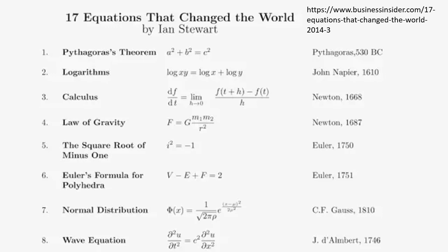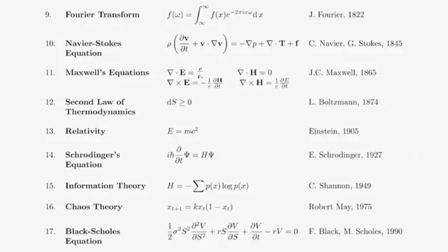Continuing the list: Euler's formula for polyhedra, normal distribution by C.F. Gauss, wave equation by J.D. Albert, the Fourier transform by Fourier, the Navier-Stokes equation by C. Navier and G. Stokes, Maxwell equations by John Maxwell, and the second law of thermodynamics by L. Boltzmann, and relativity — E equals mc squared by Albert Einstein.